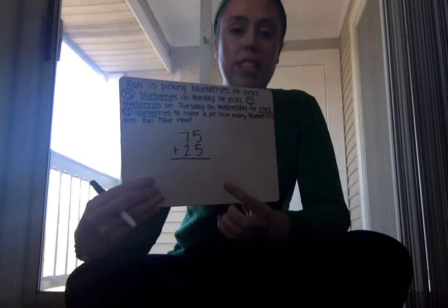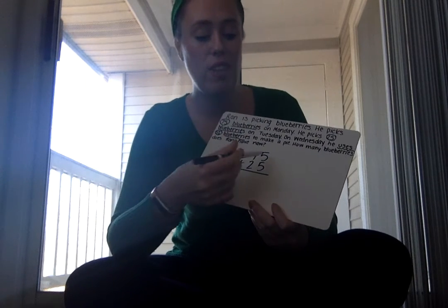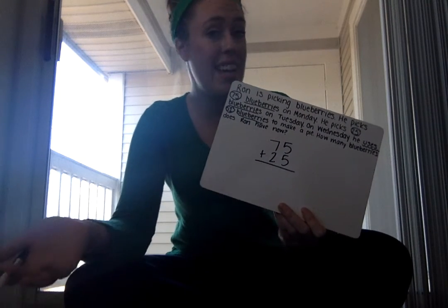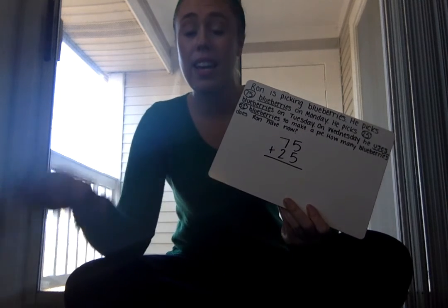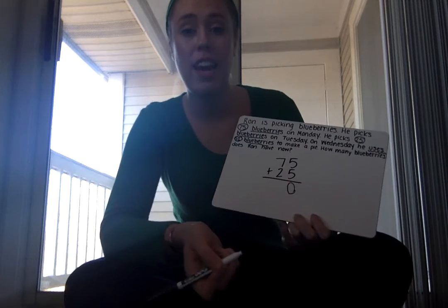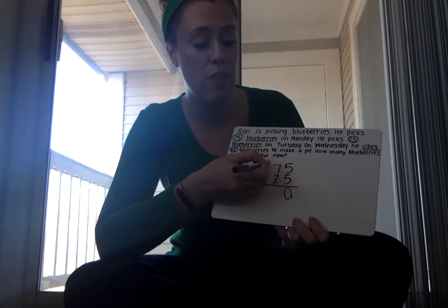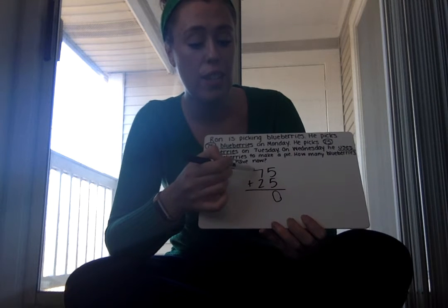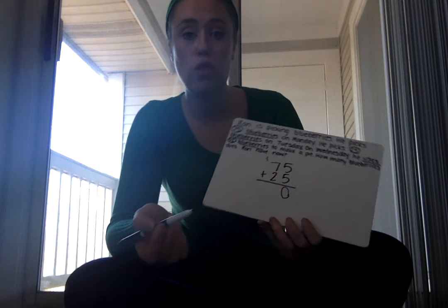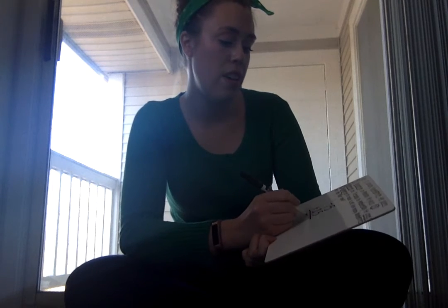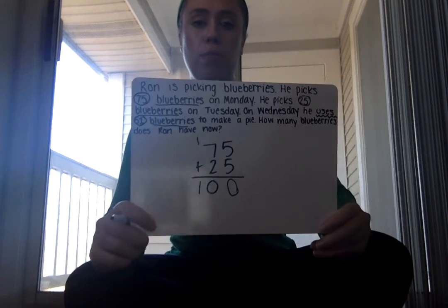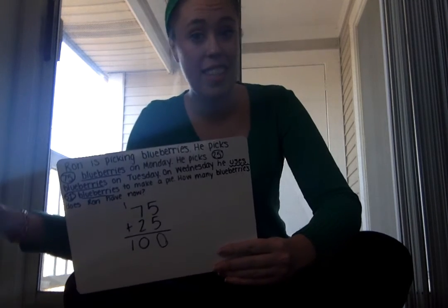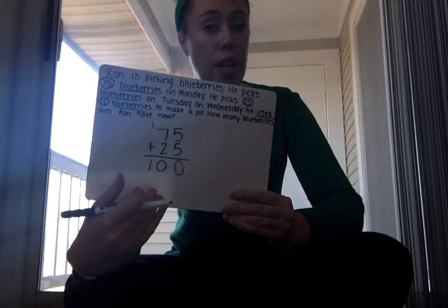When adding we always start with our ones digits. Five plus five is ten, but I can't put a group of ten into my ones column. In the number ten there are zero ones and one group of ten, so I move that one group of ten into the tens column. Then seven plus one more is eight, plus two more is ten, giving me a 10 in the tens place — which makes the number one hundred. So he picked 100 blueberries altogether.